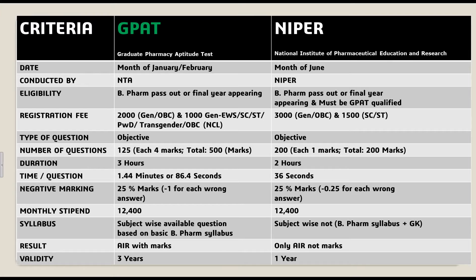Eligibility for GPAT: you should be a Pharmacy degree holder or final year B. Pharmacy student. To write a NIPER entrance exam, you should also be a Pharmacy degree holder or final year B. Pharmacy student. However, you must have GPAT qualification — you need a GPAT scorecard to write the NIPER entrance exam.